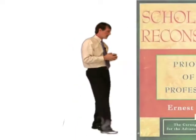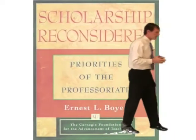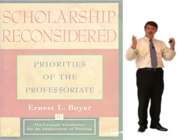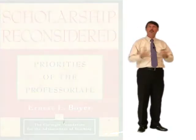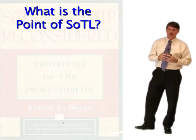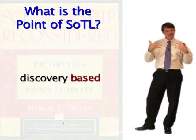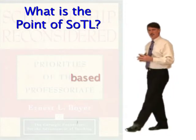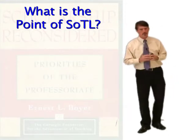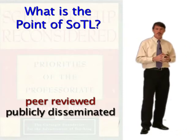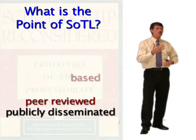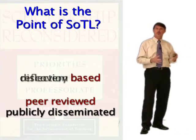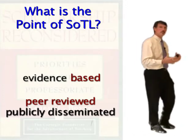The Scholarship of Teaching and Learning is basically a premise that was developed in 1990 with Ernest Boyer's Scholarship Reconsidered book out of the Carnegie Foundation. He came up with this idea of looking at teaching and learning in a scholarly way — discovery-based, reflection-based, evidence-based. These are methods we use to research effective teaching and learning. It would be peer-reviewed and publicly disseminated, all recognizable from any discipline, because it's the way we do business in the academy.